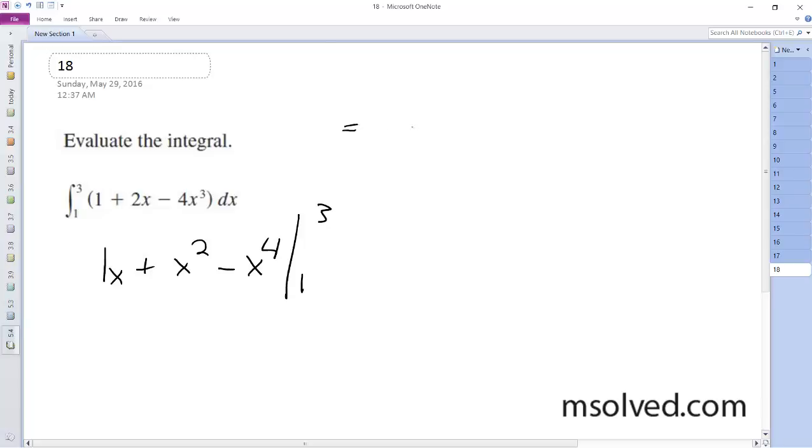This equals 3 plus 3 squared minus 3 to the 4th, quantity minus 1 plus 1 minus 1.